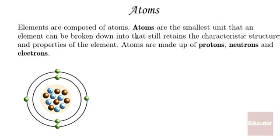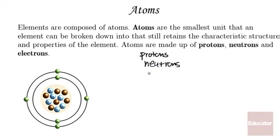Elements are composed of atoms, and these are the smallest unit that an element can be broken down to that still retains the characteristic structure and property of the element. Elements cannot be broken down into smaller particles through chemical reactions, but it is possible to break down an element further through non-chemical means, and what you find are the different subatomic particles that comprise an atom: protons, neutrons, and electrons.